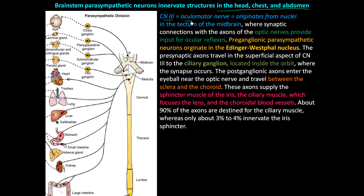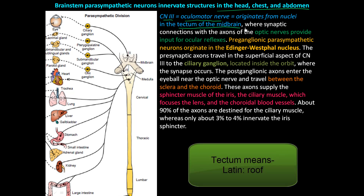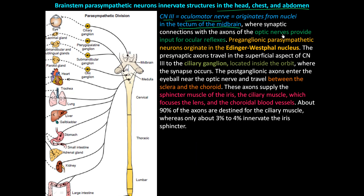Cranial nerve number three is the oculomotor nerve. It originates from nuclei in the tectum of the midbrain, where synaptic connections of the axons of the optic nerves provide input for ocular reflexes. Cranial nerve number two is the optic nerve, and as light comes through the eye it hits the receptors in the back, and that information is taken to the brain. Some of these signals connect directly to the cranial nerve three nucleus, so reflexes don't have to travel through all the synapses in the higher brain.